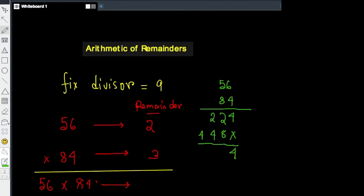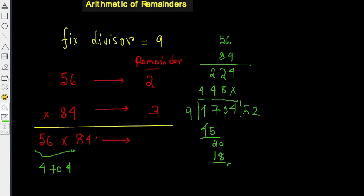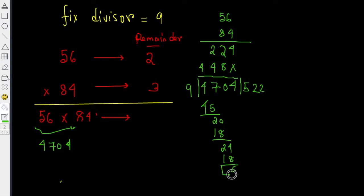The product is 4704. And if we divide this product by 9, the remainder is 6. So if I divide 56 times 84 by 9, the remainder is 6. And it turns out this remainder is the product of the two initial remainders — 2 times 3 equals 6. That's actually the curious part.